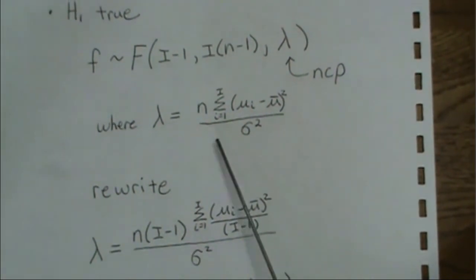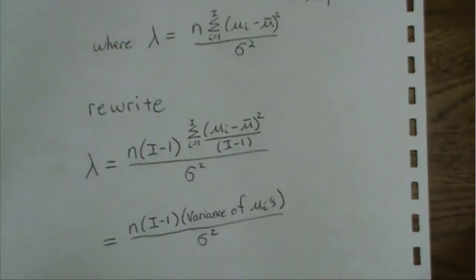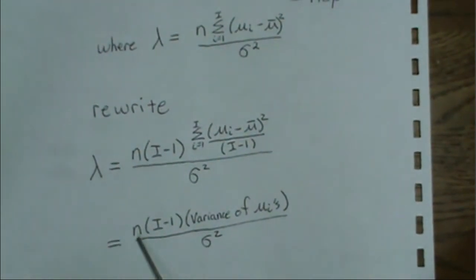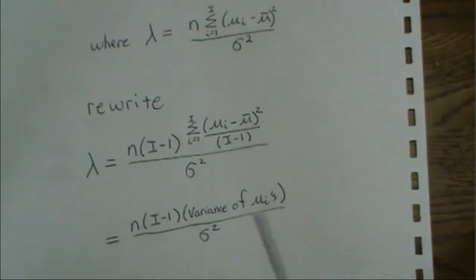What we do is we take this term and we multiply it by one, which is I minus one over I minus one. So then this right here is actually the variance of the true group means. So it could be rewritten like this. We take the sample per group, the number of groups minus one times the variance of the true means divided by the true error variance. And this is the way R thinks about it. And this is what we'll illustrate in R.